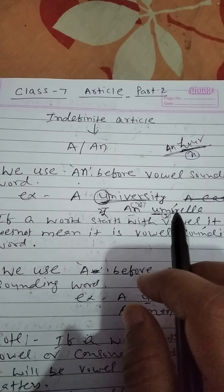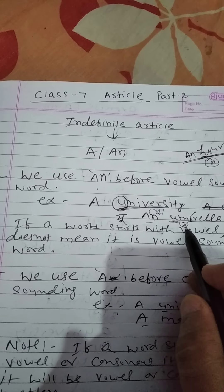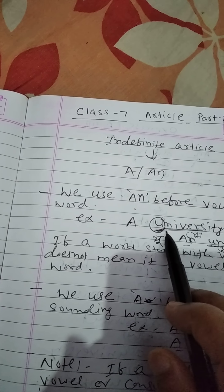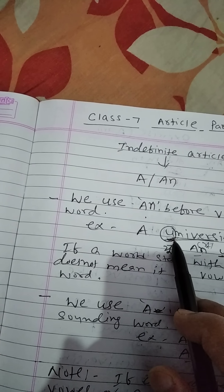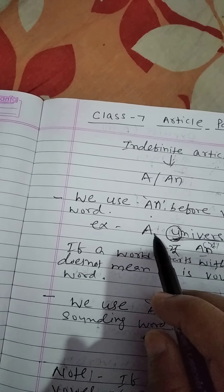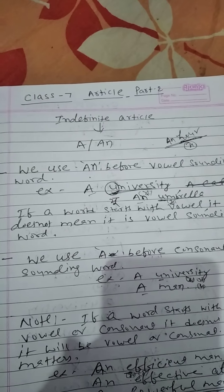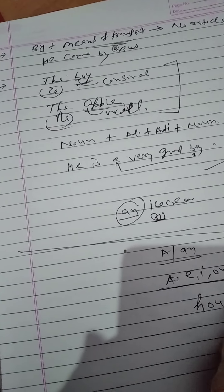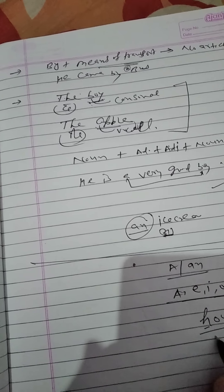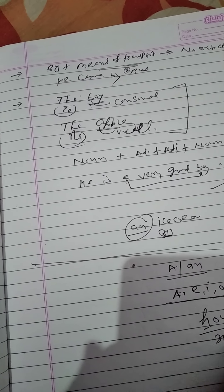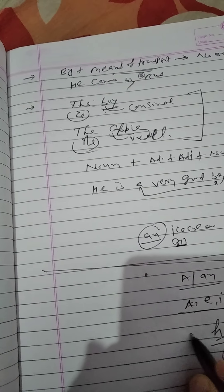For example, the word 'umbrella' starts with a vowel sound, so we say 'an umbrella.' But in 'university,' the letter is U yet the pronunciation is 'yoo' — university — so we use 'a university.' Similarly, 'hour' starts with the consonant H but the sounding is 'our,' which is a vowel sound, so we use 'an hour.'